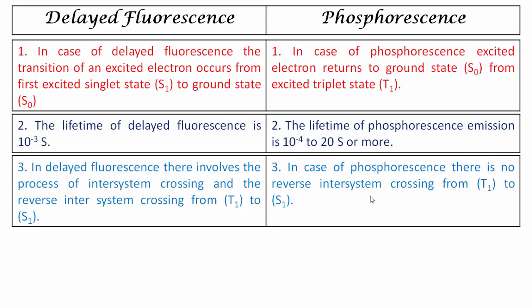In phosphorescence, the molecule goes from S1 state to T1 state by inter-system crossing, and the reverse process from T1 to S1 does not take place.